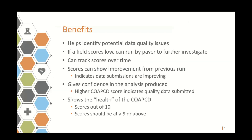What are some of the benefits of the SQI? It helps us identify potential data quality issues that may have come through intake that were not caught by our current checks. If a field score is really low, we can run that field by payer code to further investigate and reach out to the payer if needed. We can track scores over time — ideally, the scores will show improvement from a previous run of the SQI, indicating that our data submissions are improving. It gives us higher confidence in the analysis produced. A higher CUAPCD score from the SQI indicates that quality data is being submitted from the payers. And finally, it shows the health of the CUAPCD. This is why the score is out of 10. We want our score to be at a 9 or above, which gives us a lot of confidence that we are using high quality data.